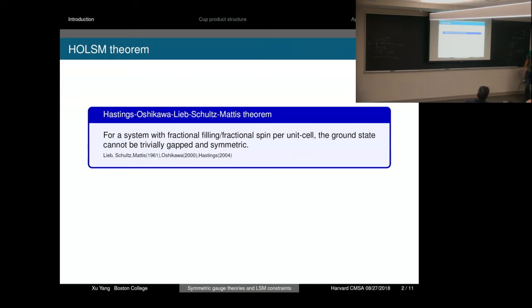First, let's review the celebrated HOLSM theorem. It states that for a system with fractional filling per unit cell, the ground state cannot be fully gapped and symmetric. In this theorem, we have assumed translation symmetry, but we can also replace it with other kinds of spatial symmetries. All such generalizations are called LSM-type constraints.